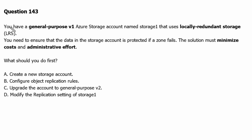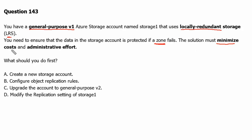Question 143. You have a general purpose v1 Azure storage account named storage1 that uses locally redundant storage, or LRS. You need to ensure that the data in the storage account is protected if a zone fails. The solution must minimize costs and administrative efforts. What should you do first?